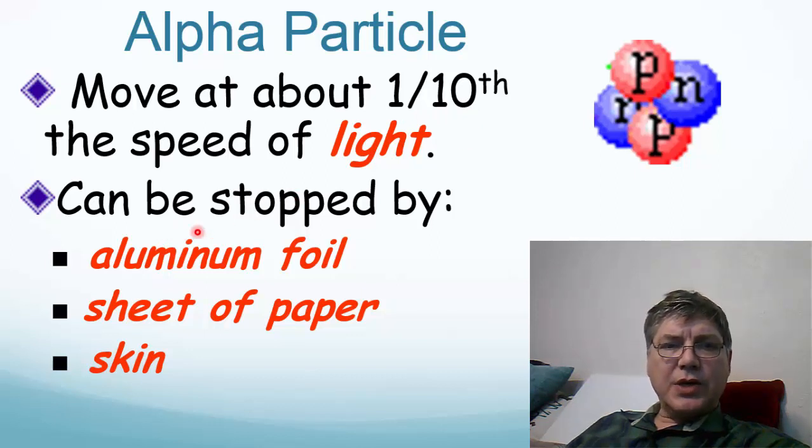Certainly a sheet of aluminum foil would stop them. Even a sheet of paper will stop them. And definitely your skin will stop alpha particles, which means when they're outside of your body, alpha particles are completely safe. You could even hold an alpha particle emitter in your hand, and it would cause no damage whatsoever.